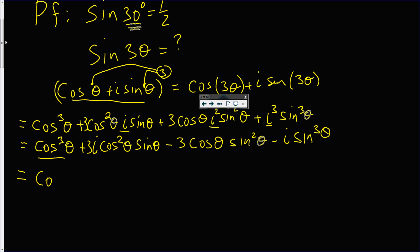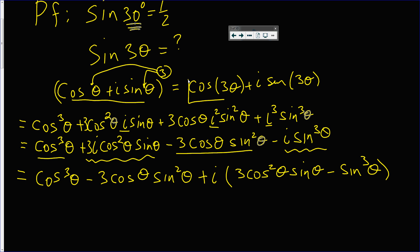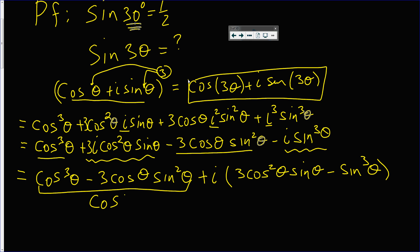So we have cosine³θ minus 3 cosθ times sin²θ, plus i times (3 cos²θ sinθ minus sin³θ). And remember this last line is equal to cosine(3θ) plus i sin(3θ), so the real part is cosine of 3 theta and the imaginary part is the sine of 3 theta.